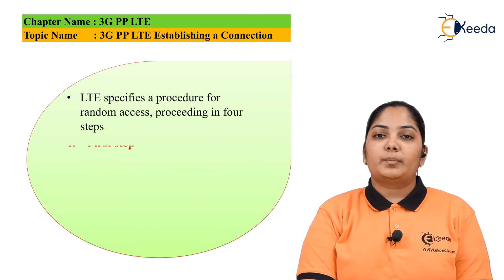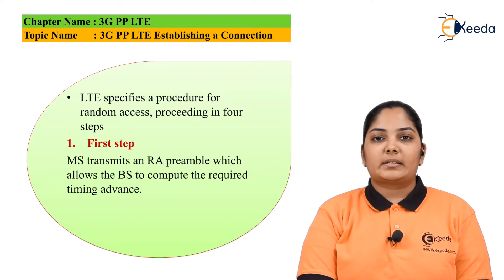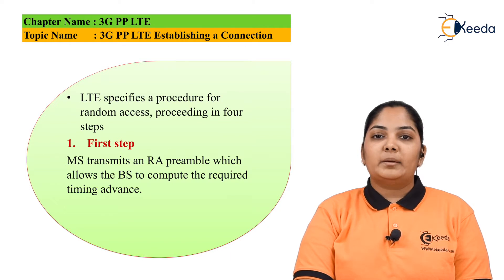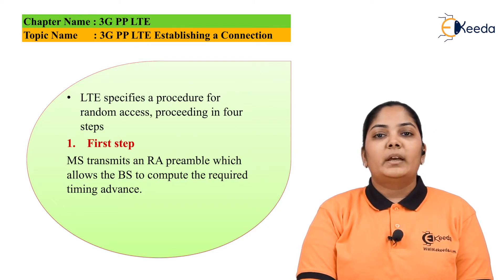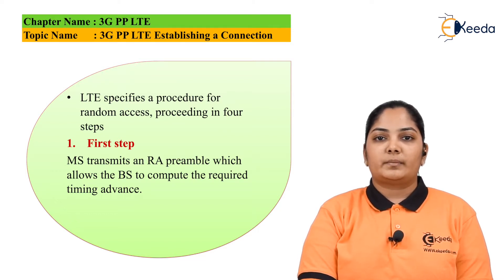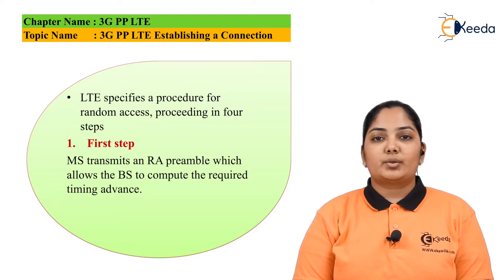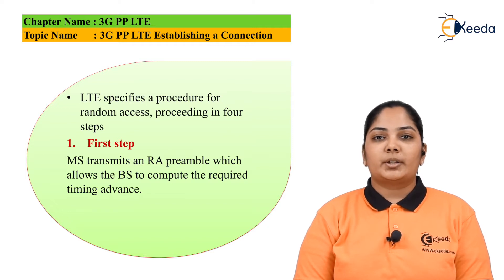LTE specifies a procedure for random access in four steps. The very first step is the mobile station transmits a random access preamble which allows the base station to compute the required timing advances. If the mobile station wants to join the network, it has to let the base station first know about this request. The mobile station does not have any resources assigned to it at this time, therefore it will make a connection-based access, i.e. a random access.